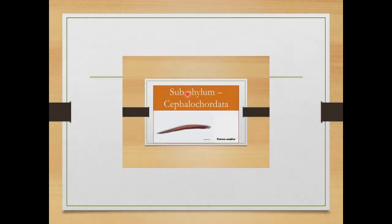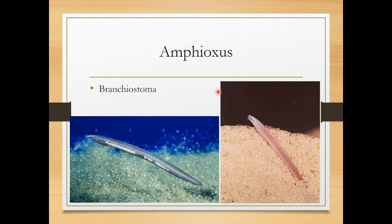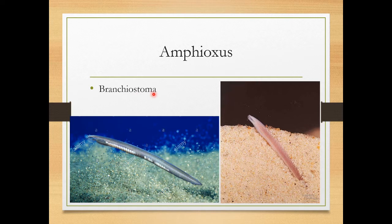In the last video we saw the salient features of subphylum Cephalochordata. In this video we'll look at the example called amphioxus, or simply branchiostoma. 'Amphi' means both ends, 'oxus' means pointed — so both anterior and posterior ends are pointed. 'Branchio' means gills and 'stoma' means mouth, so there are gills near the mouth. Amphioxus is commonly known as lancelet.